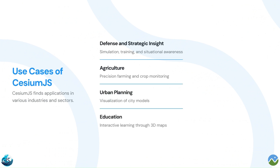Use cases of CesiumJS: The first is utilizing CesiumJS for simulating scenarios, conducting training exercises, and enhancing situational awareness in defense and intelligence contexts. For agricultural precision, CesiumJS can be applied in agriculture for precision farming practices, continuous monitoring of crop conditions, and visualizing agrivoltaic panels.